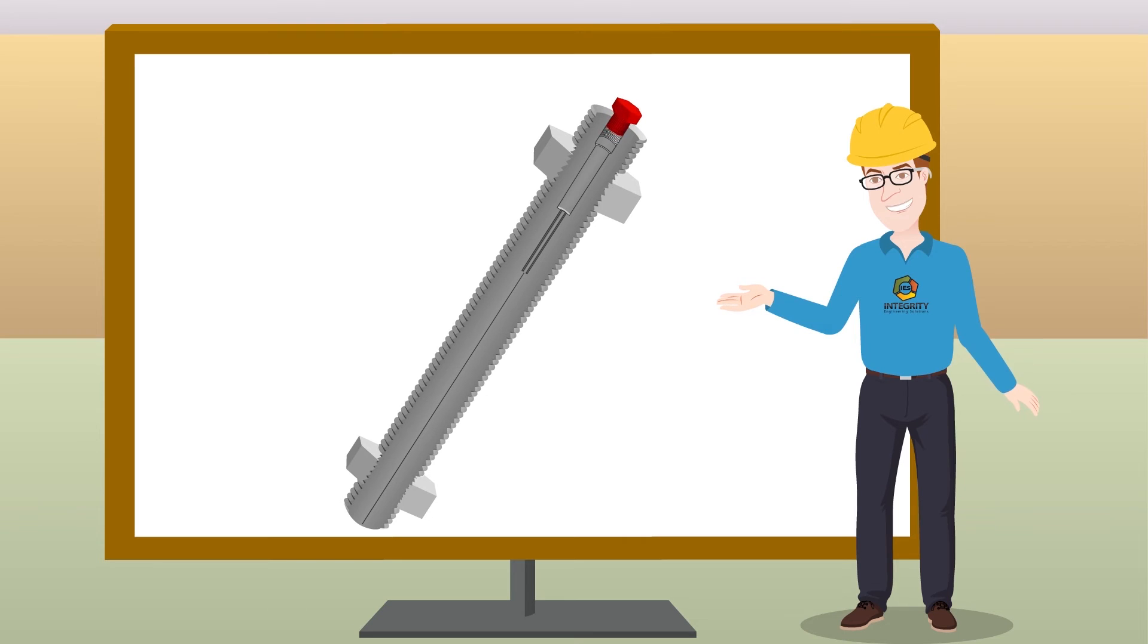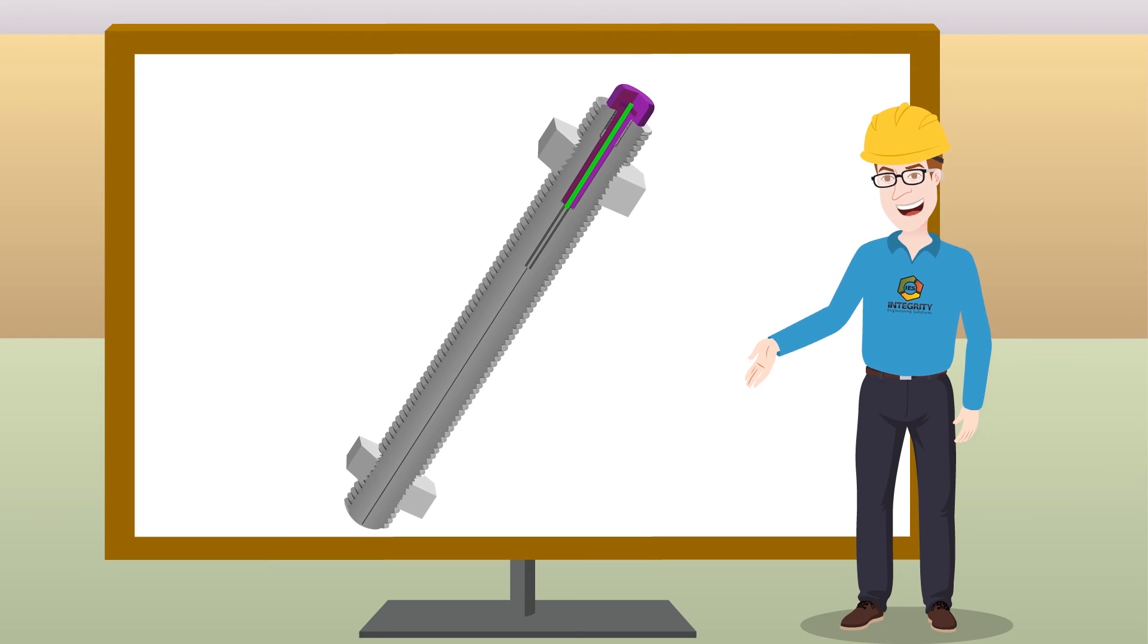the bolt stretches, but the internal pin remains the same length. This allows the bolt load to be determined by measuring the displacement between the end of the pin, A, and the internal recessed landing surface on the bolt, B.